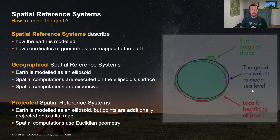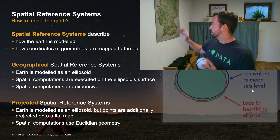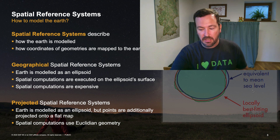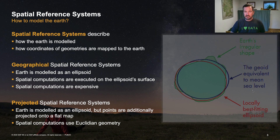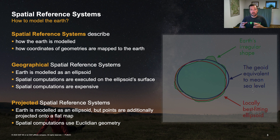On top of that, you have the projected spatial reference systems. This is essentially the earth modeled as an ellipsoid and then projected onto a flat map, like you see here behind me. In that case, spatial computations are cheaper because they're just in Euclidean space, so the mathematics are simple. But on the other hand, of course, you get some distortions due to the fact that you projected that ellipsoid onto a flat map.